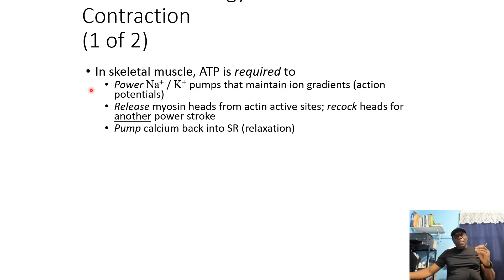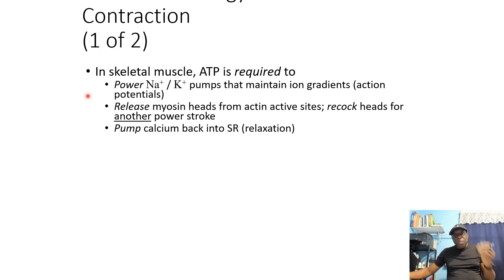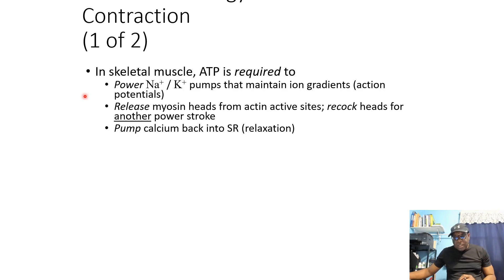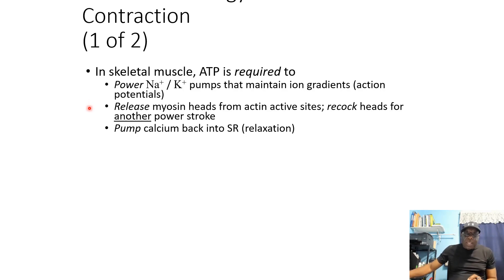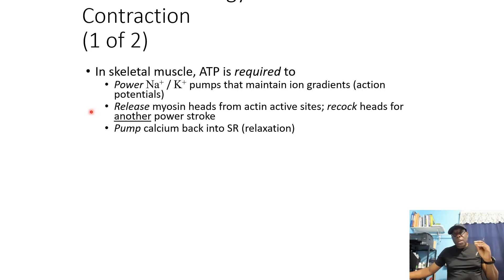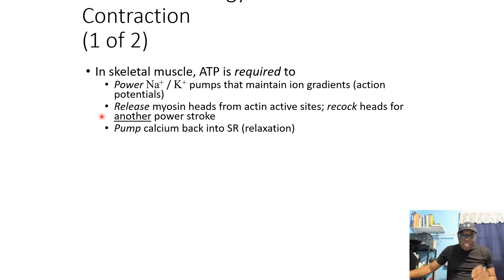We need ATP to power those pumps. Then, after myosin heads hydrolyze ATP to power the cocking of the head, the head binds to the active sites on actin, a power stroke follows, ADP and Pi fall off prior to the power stroke. But then myosin heads remain attached to actin in a very low energy state. To energize detachment of the head from the actin binding sites, a fresh new ATP molecule must bind to the myosin head and at the same time reloads the head for another contractile cycle — re-cocking it.